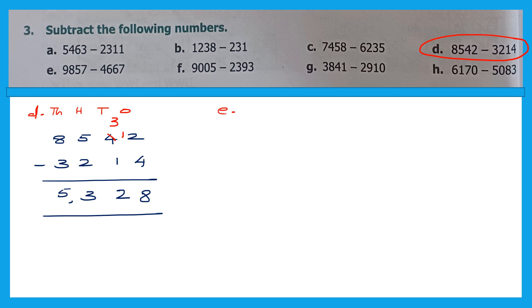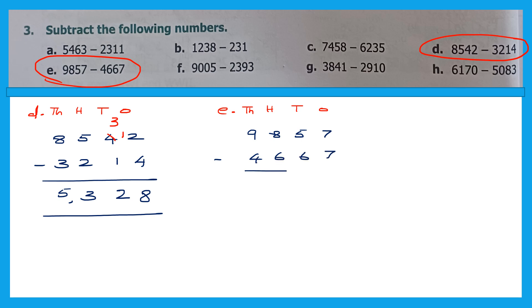Now let's take question E. Write ones, tens, hundreds, thousands. The question is 9,857 minus 4,667. Ones: 7 minus 7 is 0. Tens: 5 minus 6 — can't do, so borrow from 8; 8 becomes 7 and this becomes 15. 15 minus 6 is 9. Hundreds: 7 minus 6 is 1. Thousands: 9 minus 4 is 5. The answer is 5,119.